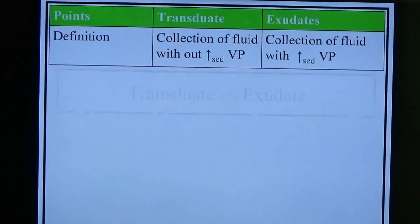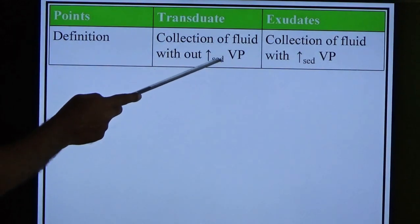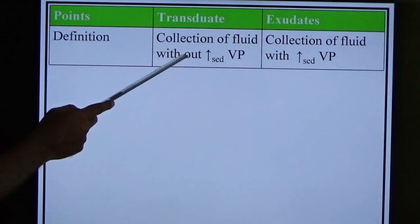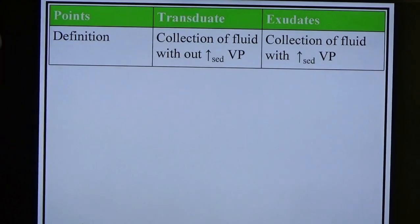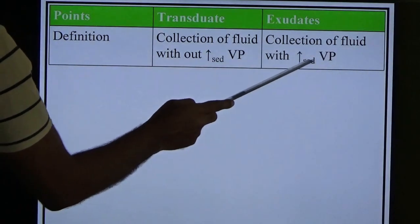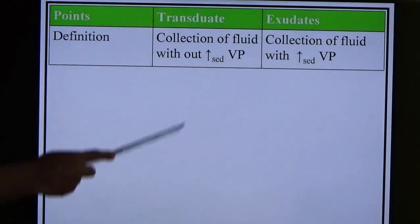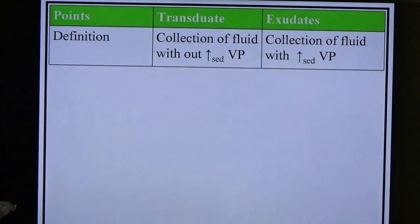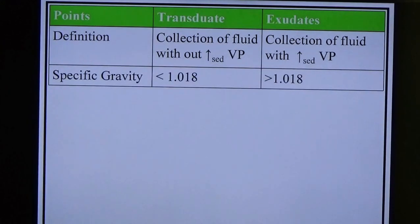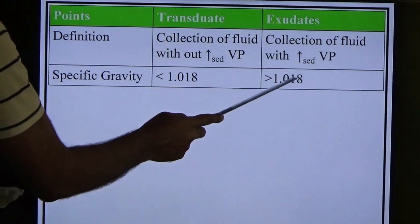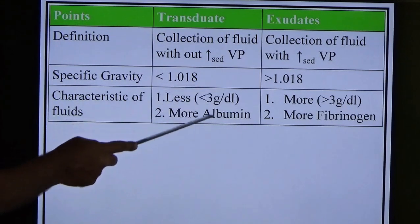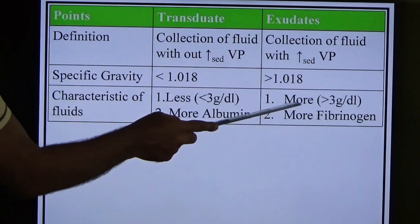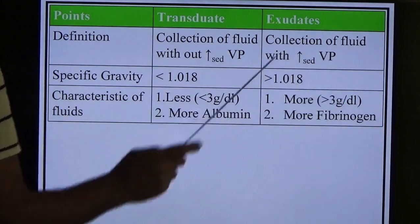Transudate: collection of fluid without increased vascular permeability — occurs purely due to pressure gradient (HP and PCOP problem). Exudate: collection of fluid with increased vascular permeability. Specific gravity: transudate < 1.019; exudate > 1.018. Protein content: transudate < 3 g/dL (more albumin); exudate > 3 g/dL (more fibrinogen).